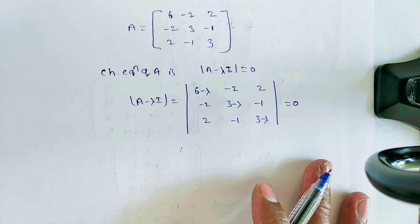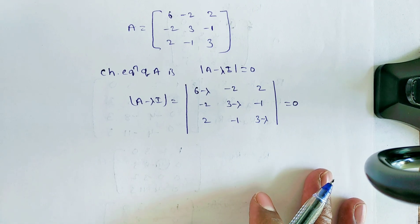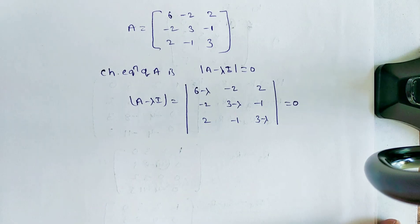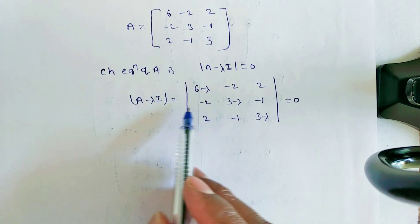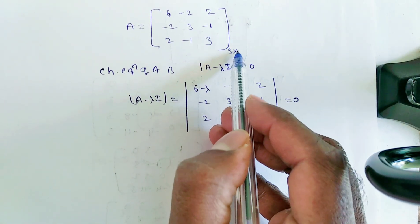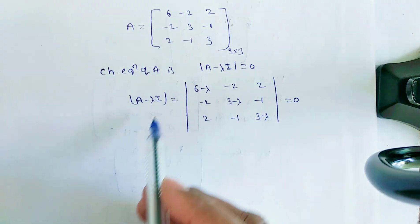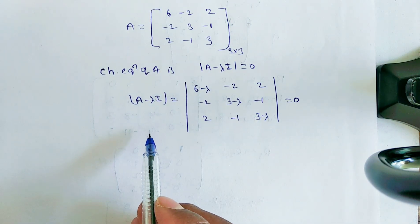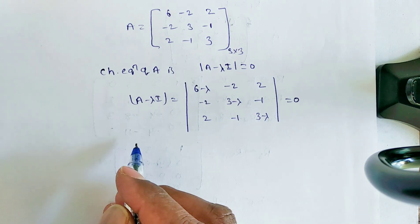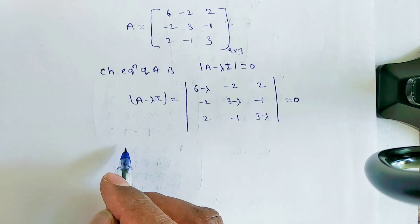For that purpose, I am explaining by using the calculator how you can get the result. Before that, you have to know some useful information. The given matrix is of order 3 by 3. A 3×3 matrix gives a characteristic equation of degree 3, so you will get 3 characteristic roots.